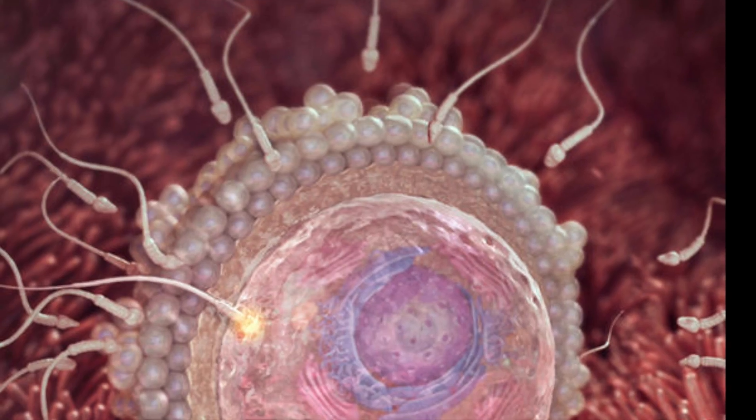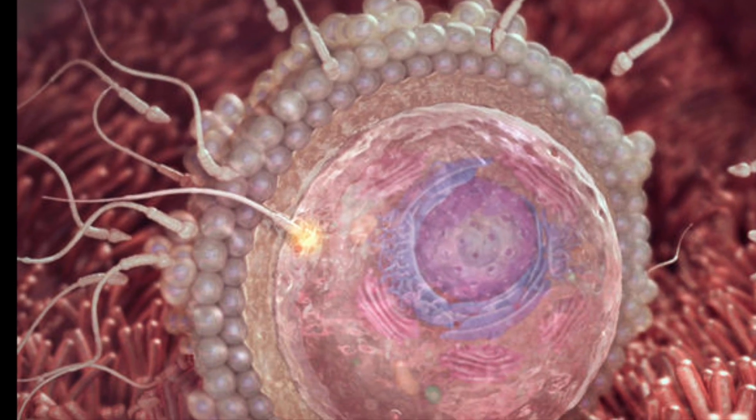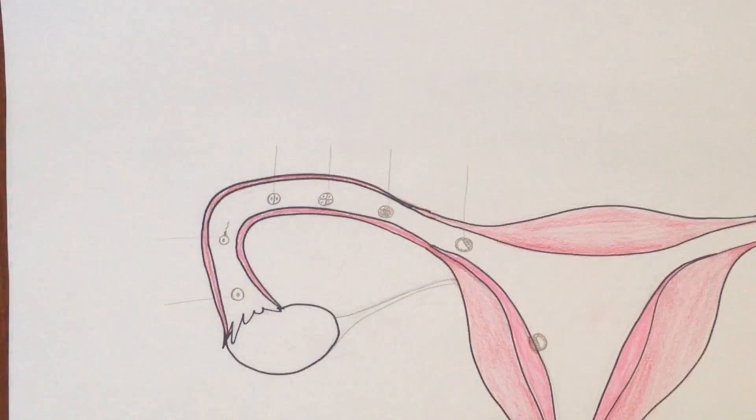Fertilization occurs when a sperm cell fuses with a secondary oocyte within the fallopian tube to form a single diploid cell.